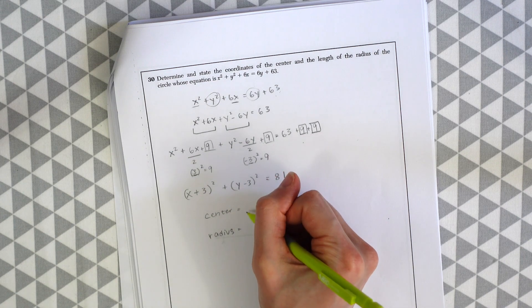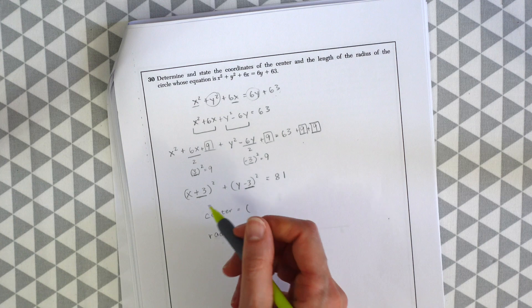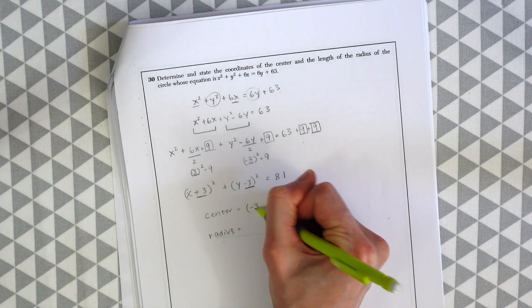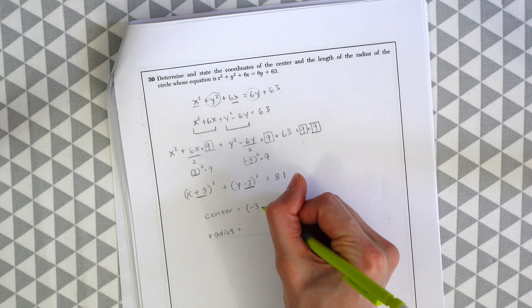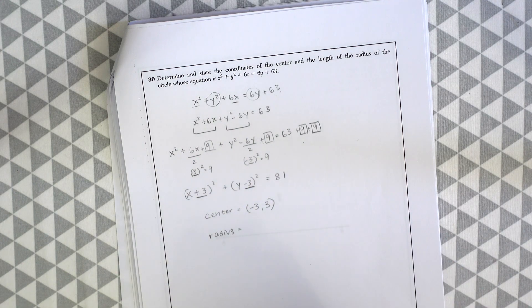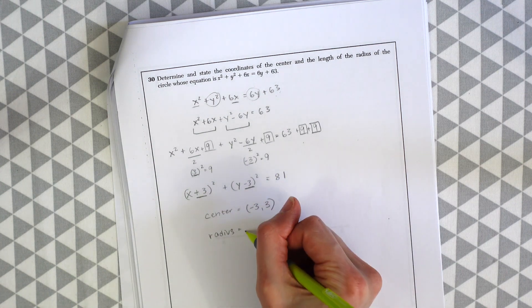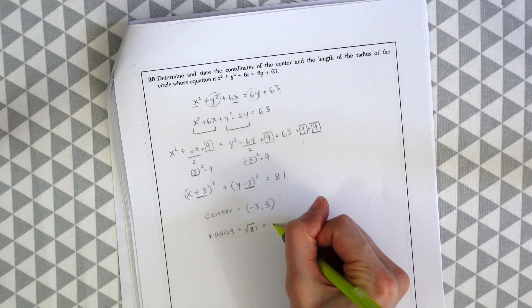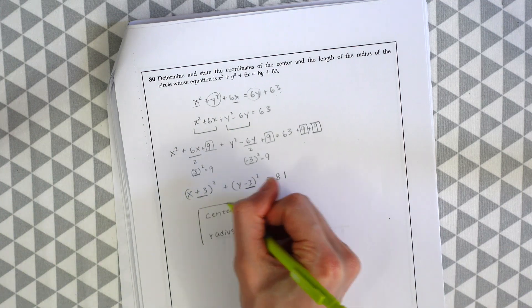So the center is always going to be right here. But we're always going to negate the value. So this is a positive 3. So x is going to be a negative 3. And for the y this is a minus 3 which will be a positive 3. And as for the radius we're always going to be taking the square root of this number to the right of the equal sign. Which in this case is 81. Which means the radius is equal to 9. And that's our answer.